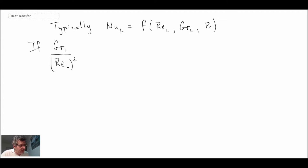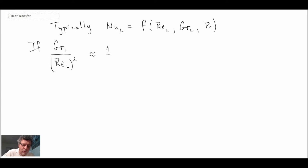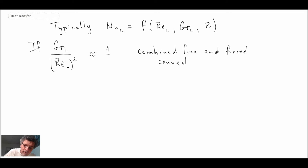To begin with, if we have the Grashoff number — remember the way that we got the Grashoff number, we multiplied our governing equation by Reynolds number squared, which is why we're dividing the Grashoff number by Reynolds number squared here — if this ratio is approximately equal to one, we have a flow regime referred to as combined free and forced convection. Consequently, the Nusselt number is going to be a function of all three: the Reynolds number, the Grashoff number, and the Prandtl number.